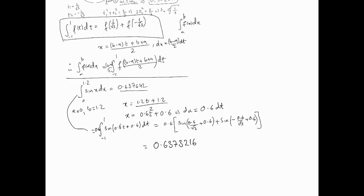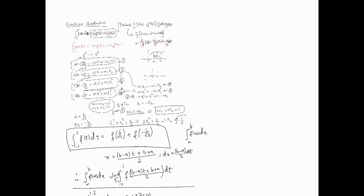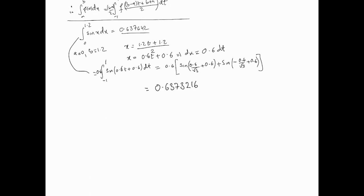Working this out gives 0.6372316, which is approximately correct. This quadrature is third-order accurate — comparing it to a cubic Taylor series approximation to the function. This brings up an important question: why did we use 1, t, t², t³ as our test functions? The answer comes from linear algebra.